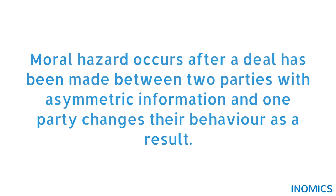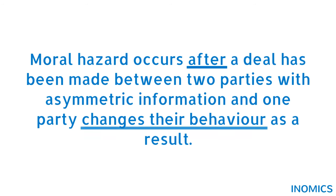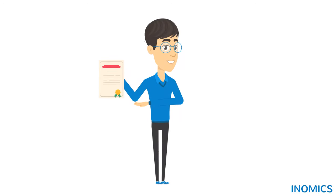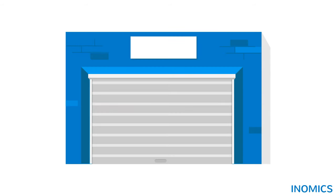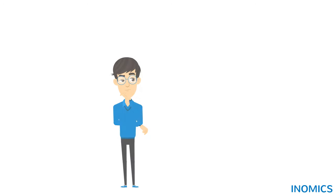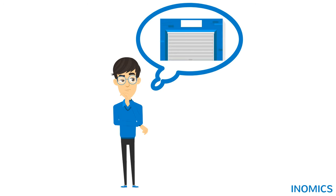Moral hazard occurs, on the other hand, after a deal has been made between two parties with asymmetric information and one party then changes their behaviour as a result. Oscar also purchased theft and damage cover when he got his new auto insurance policy. The price of the policy was based on Oscar telling the insurance provider that he always parks his car in a secure garage. There's asymmetric information here because only Oscar knows for certain whether he always parks his car in the locked garage.